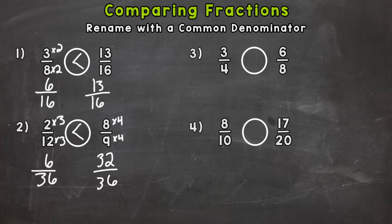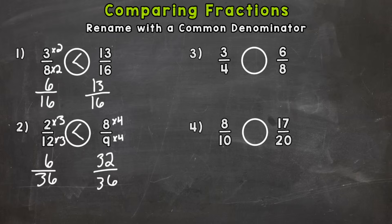Looking at the original problem: two twelfths is less than half because 6 out of 12 is half, and obviously 2 out of 12 is less than that. So the left side is less than half. On the right, half of 9 is four and a half and we have eight ninths, so we're well over half. The right side is more than half and the left side is less than half — that also helps us compare, and we proved it using a common denominator.